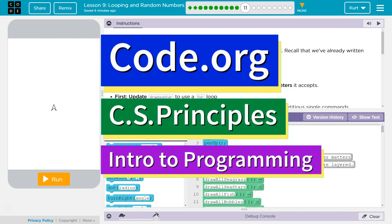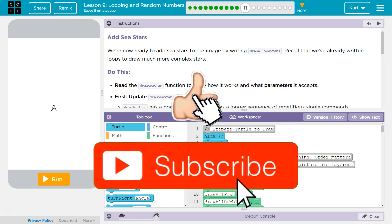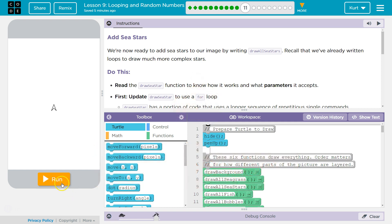This is code.org. I'm currently working on their CS Principles course. I'm on Unit 3, Intro to Programming, Lesson 9, Looping and Random Numbers, Part 11. Let's see what we're doing. Add C-Stars, add C-Stars, and now we're ready to add C-Stars to our image by writing Draw All C-Stars. Recall that we've already written loops to draw much more complex stars. Let's see what we got. Cool.